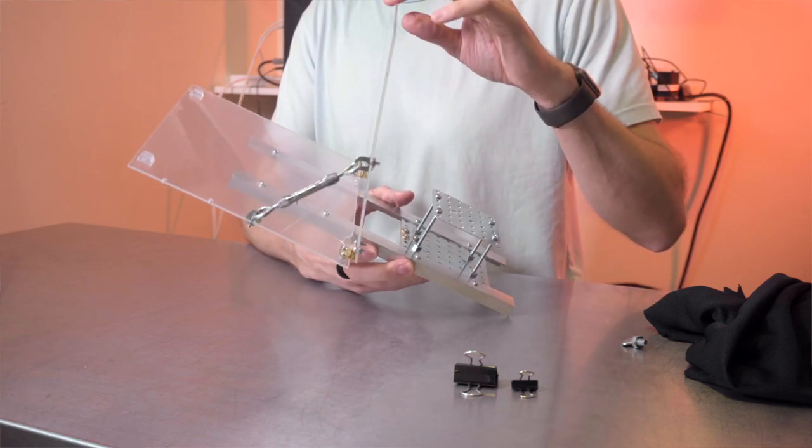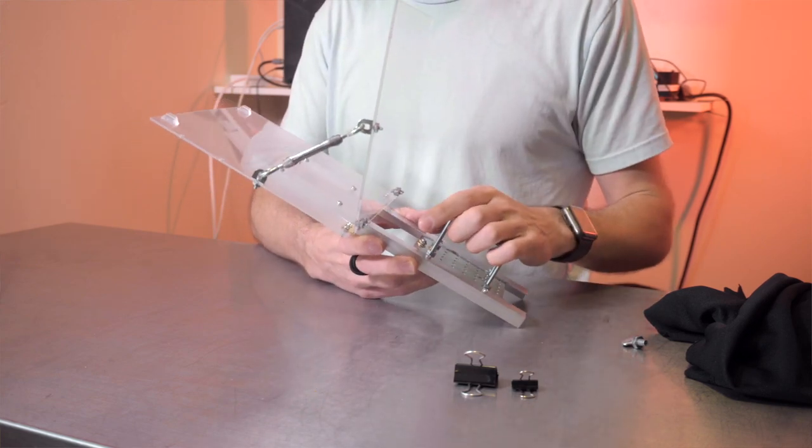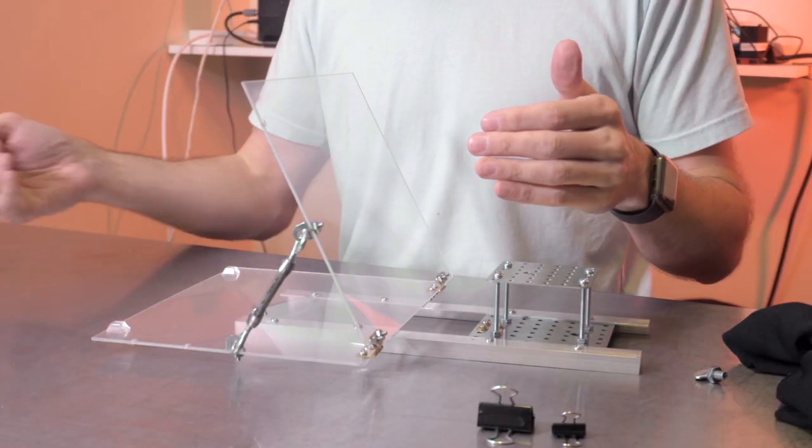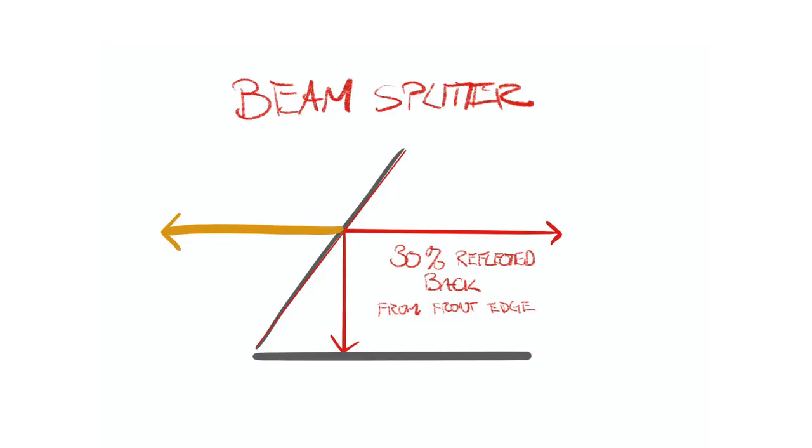The one thing to note though is regular teleprompters use what's called beam splitter glass, which allows, it's like a 70, 30 ratio. So 70% of the light goes through and 30% blocks out and gets reflected back to you. You'll get really sharp text.